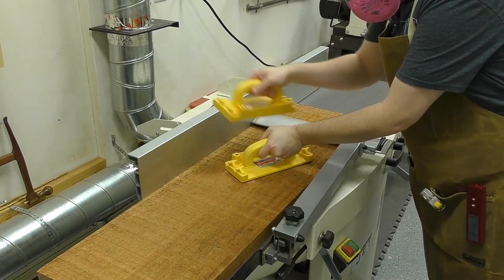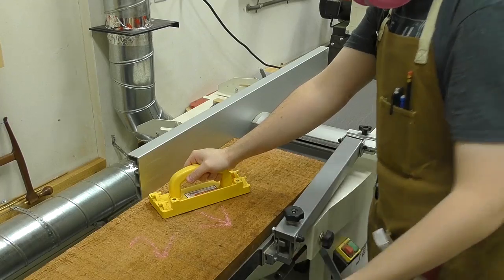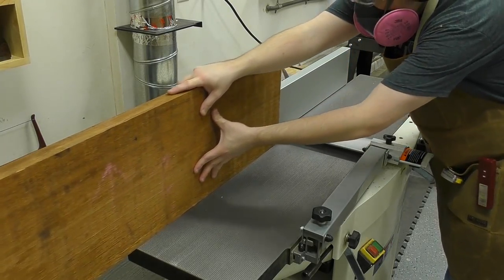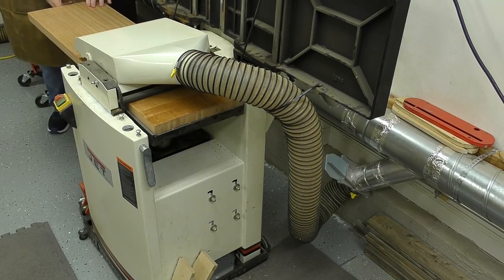For the blanket chest, I used inch and a half thick quarter sawn African mahogany. And I begin by milling up the lumber to seven eighths of an inch thick using the joiner and the planer.